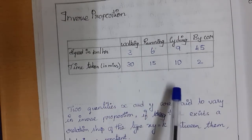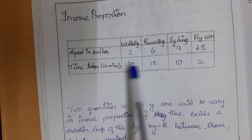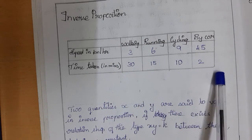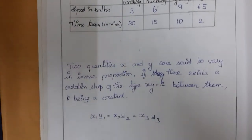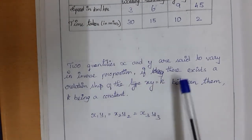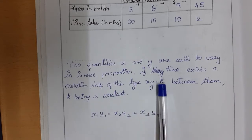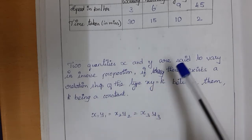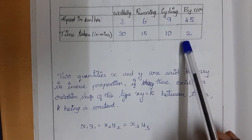You can see this is not like direct proportion. As speed is increasing, time is decreasing. When one quantity increases and another decreases, we call it inverse proportion. Two quantities X and Y are said to vary in inverse proportion if X into Y equals a constant K. Notice that the products are all the same: 3×30=90, 6×15=90, 9×10=90, 45×2=90.